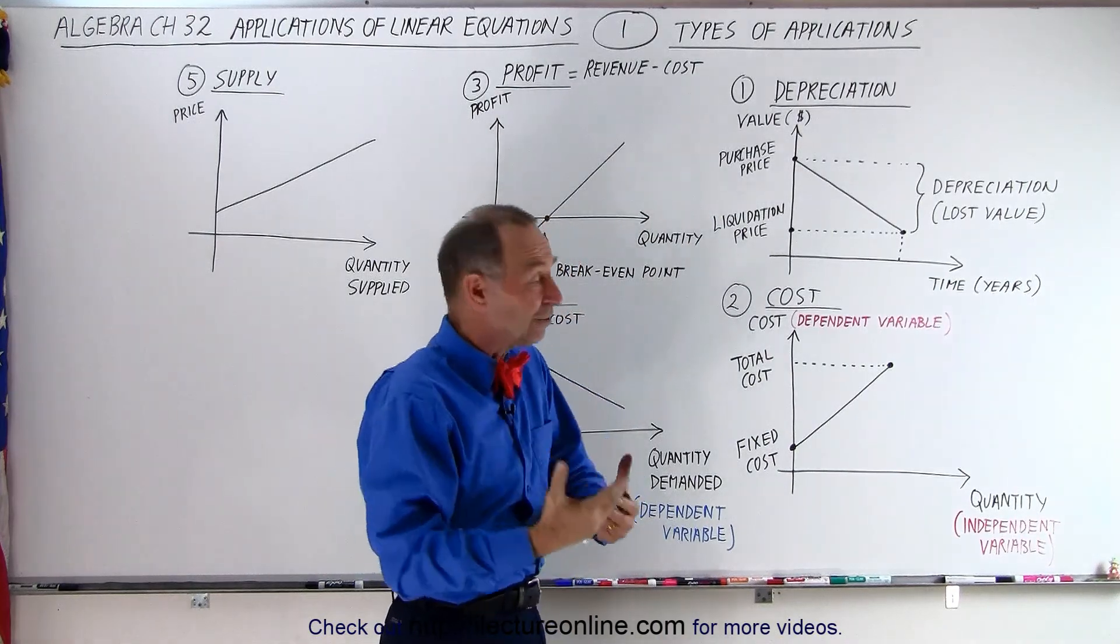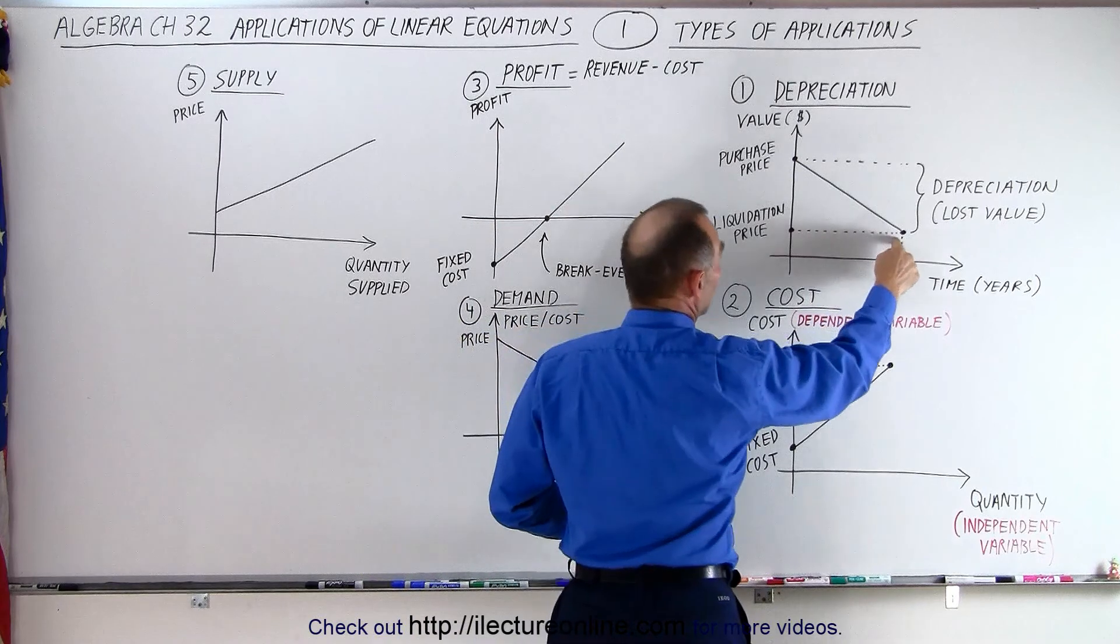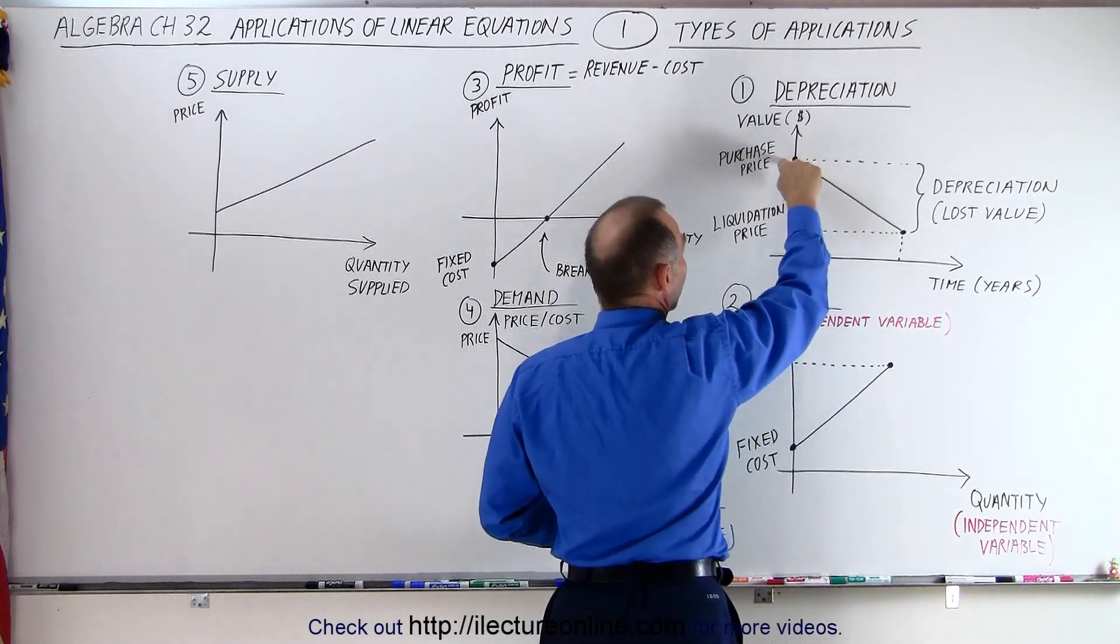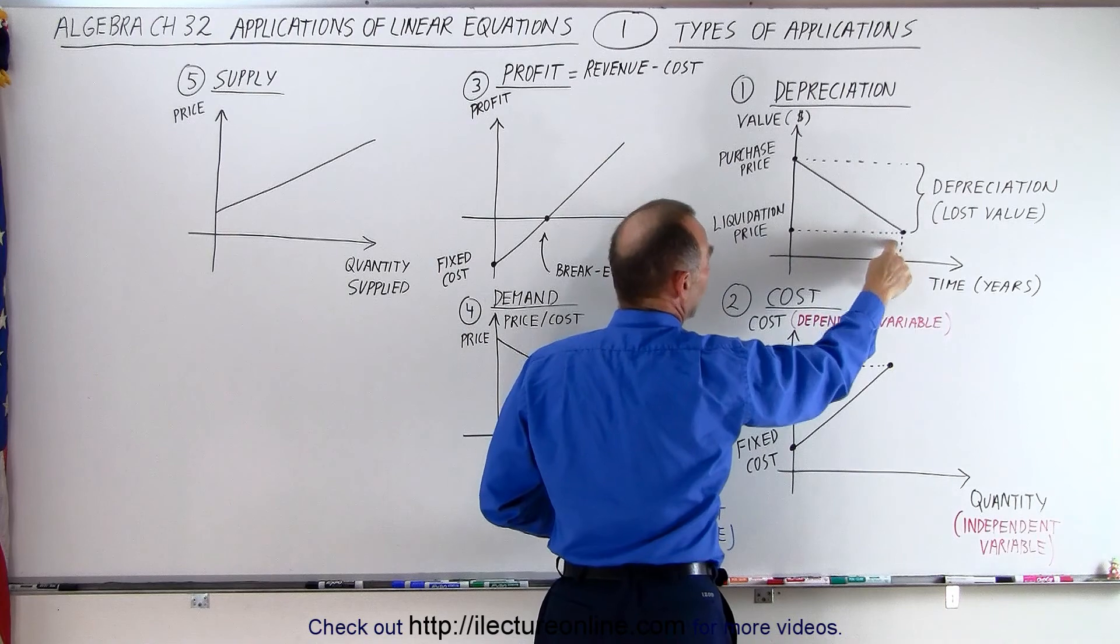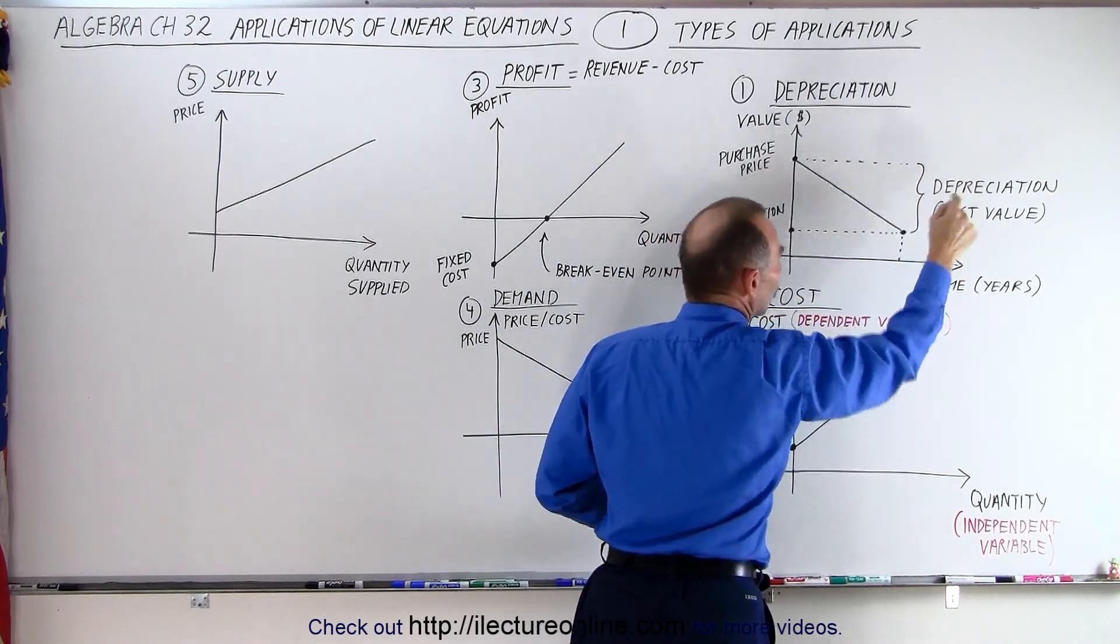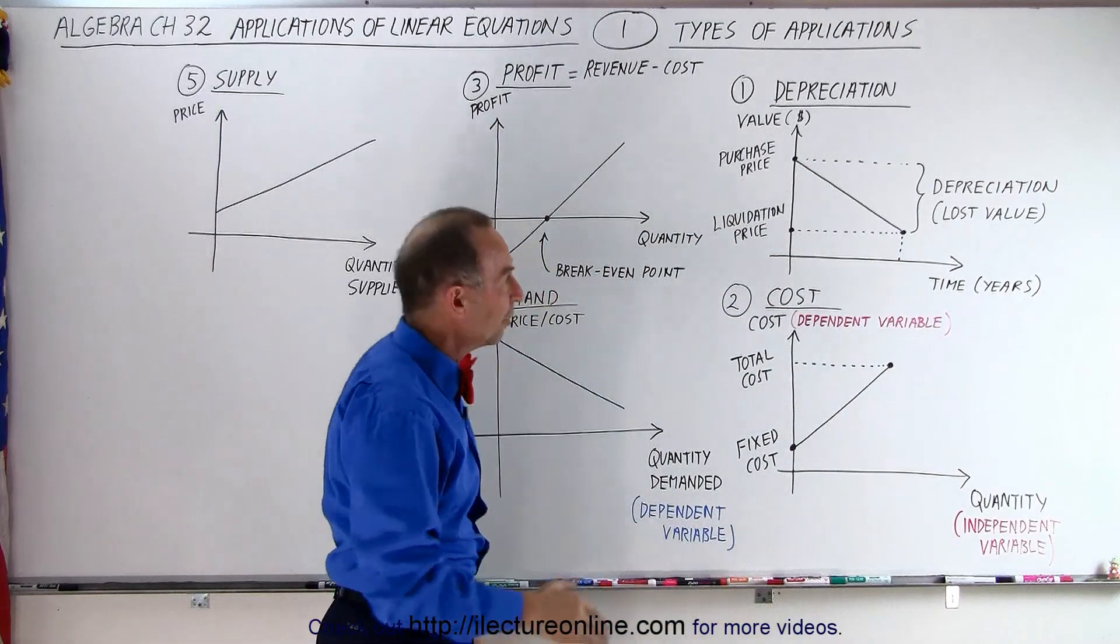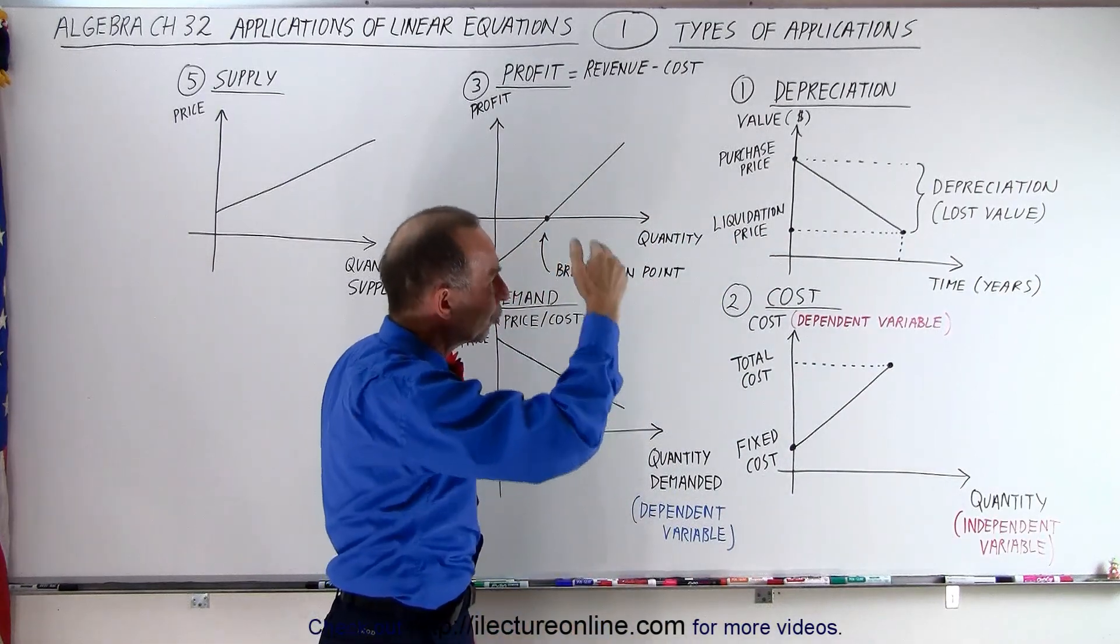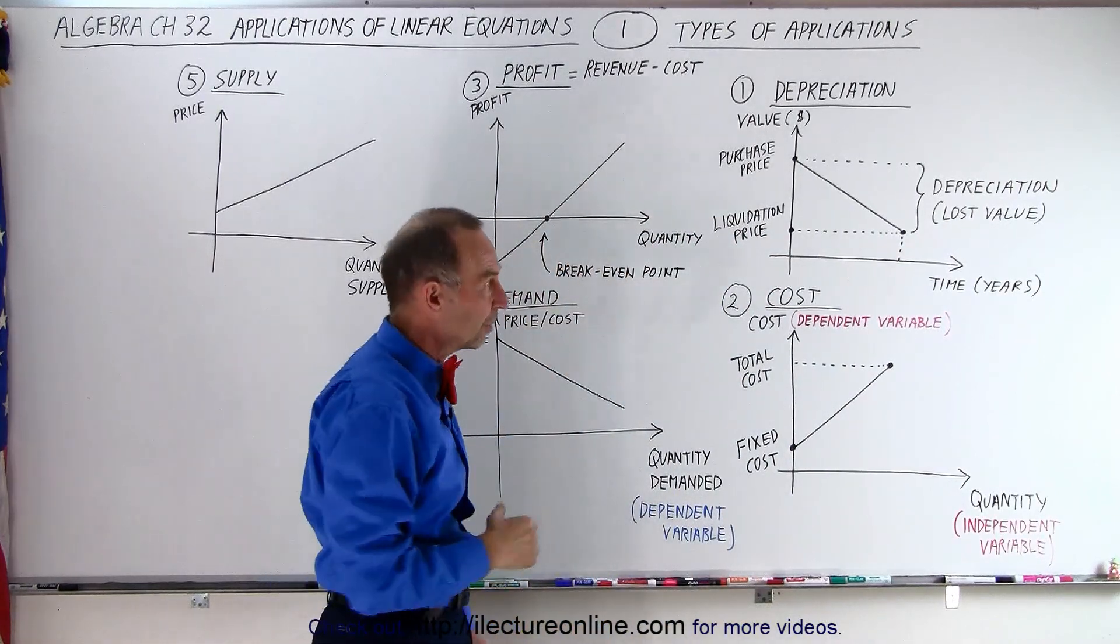You want to get whatever you can get for it at the liquidation price. So the difference in what you paid for it versus what you can get for it when you sell it after a certain amount of time, that's what's called the depreciation or the lost value of the machine. As you can see, as time goes by, the machine is worth less and less. So that's one example.